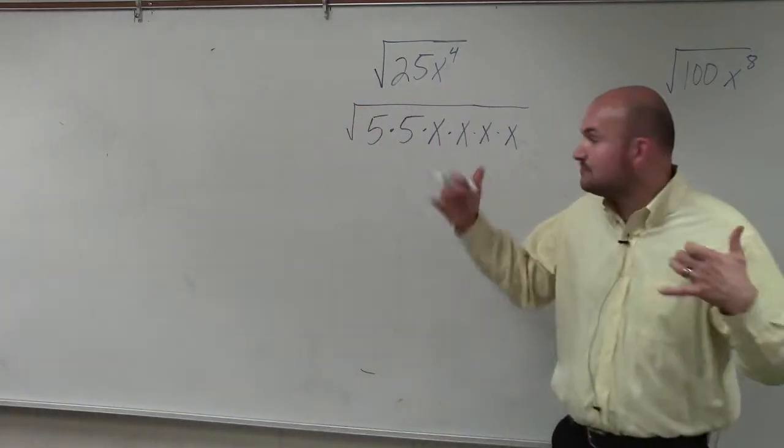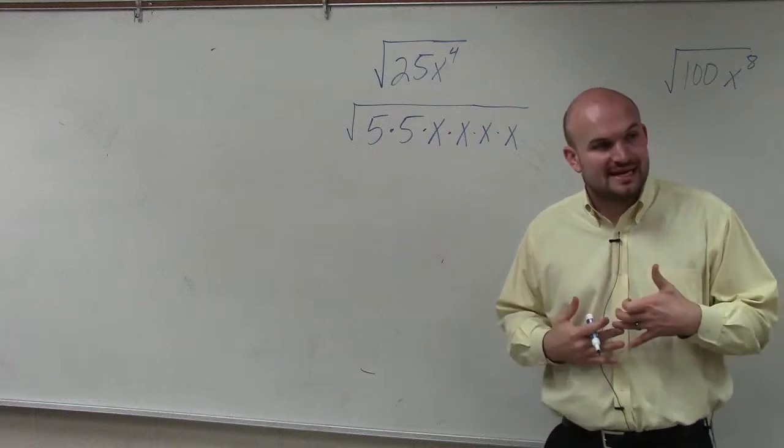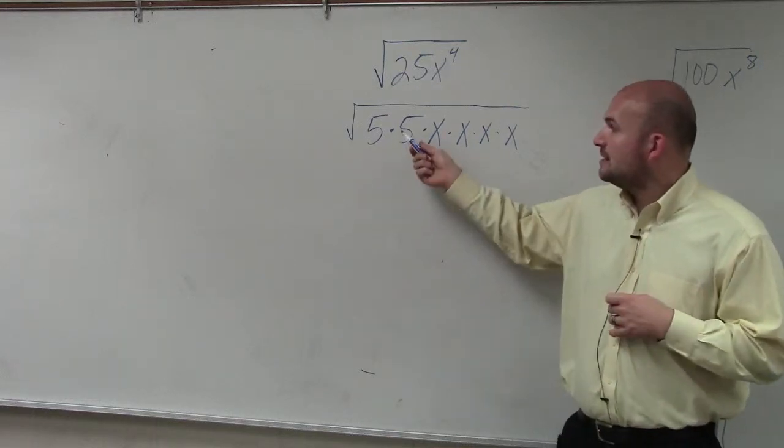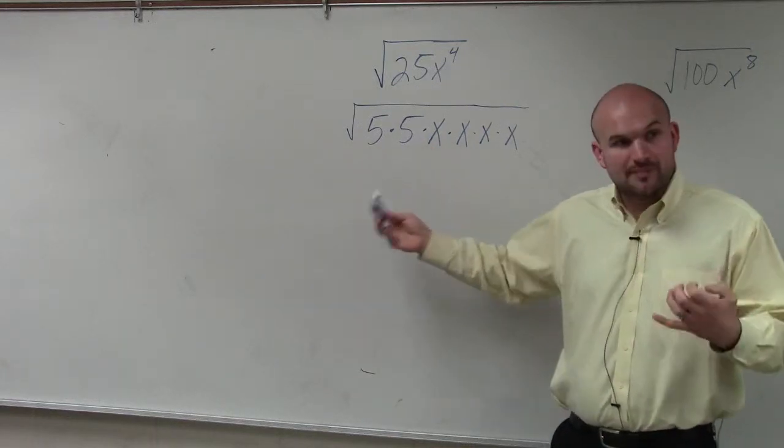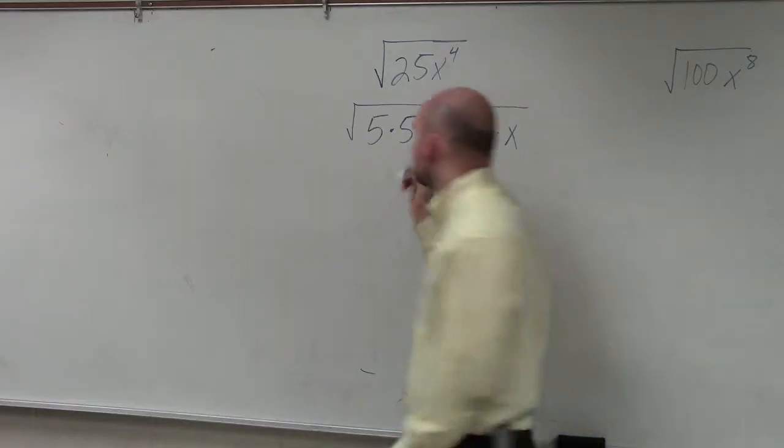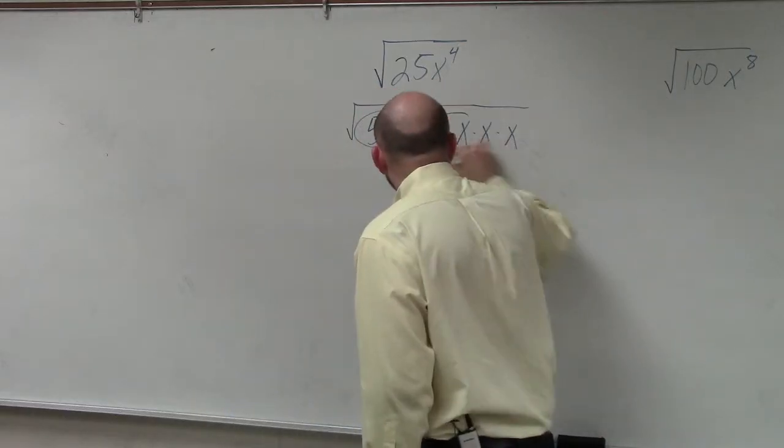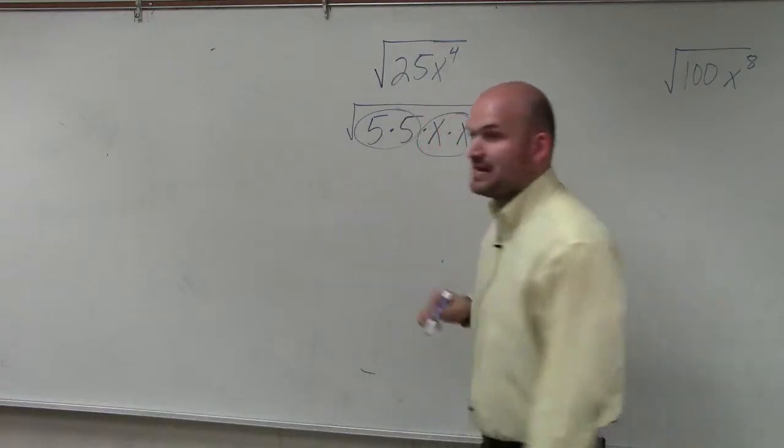But now, by breaking it down this way, what we can see is that here, the square root represents, you know, what numbers are multiplied by themselves? Well, I have 5 times 5, x times x, and x times x.